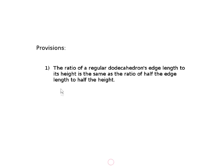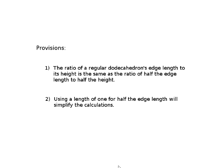In order to do this, we'll carry on with two provisions. One, the ratio of a regular dodecahedron edge length to the height is the same as the ratio of half the edge length to half the height. This should be obvious. The second provision is to use a length of 1 for half the edge length, and this will simplify the calculations, as you shall see.